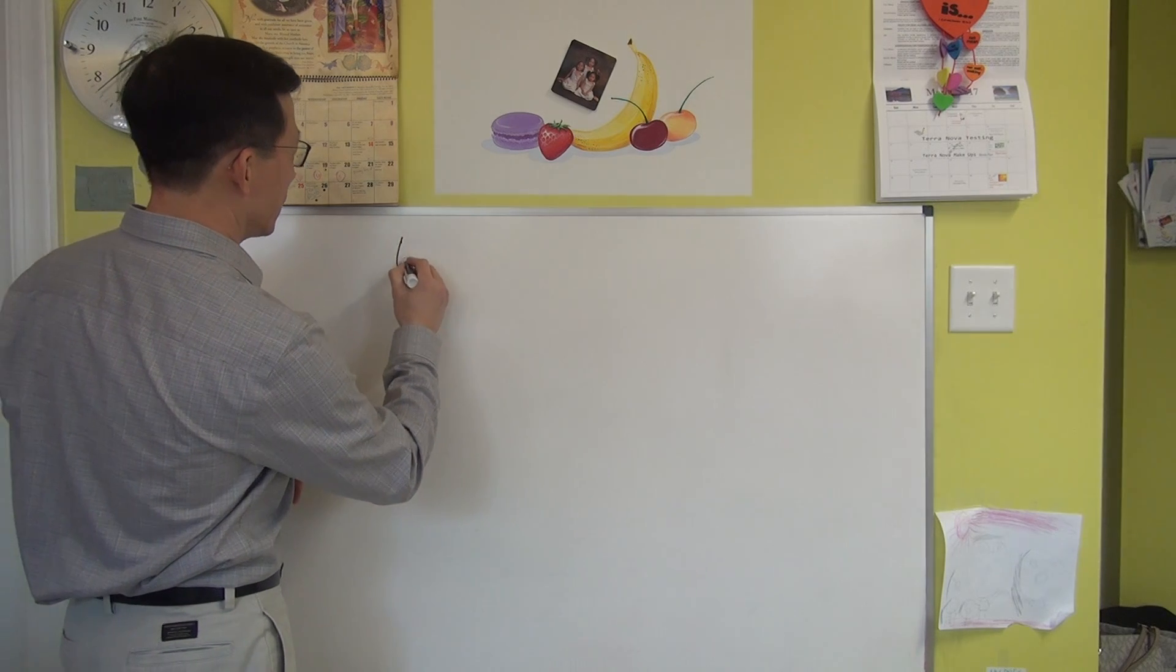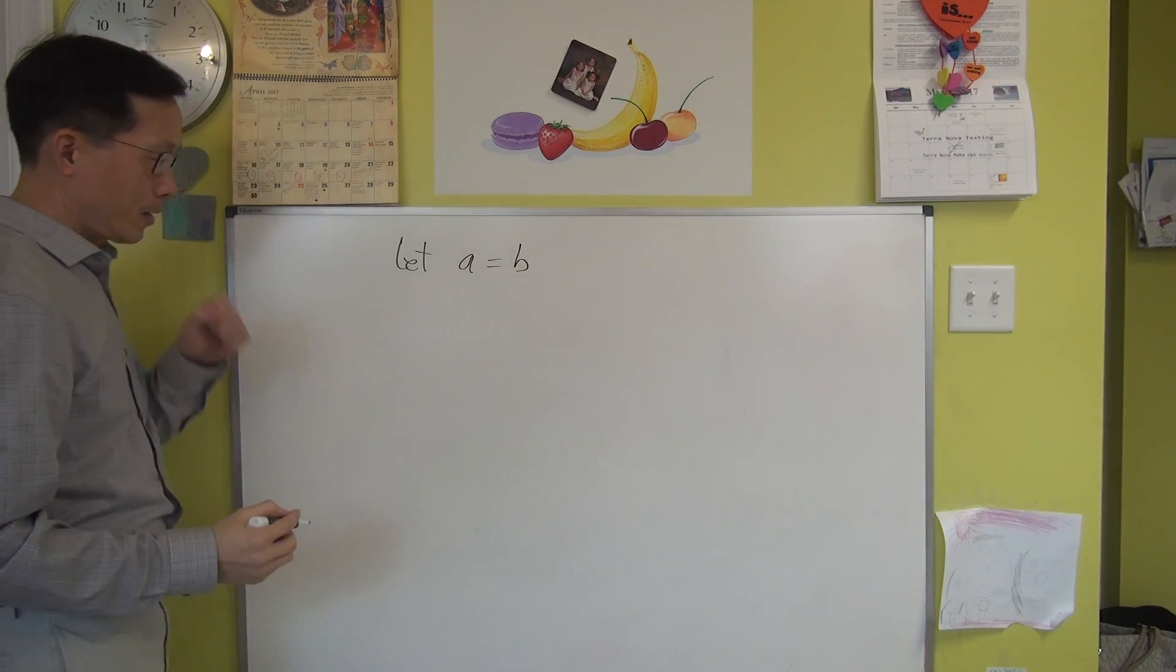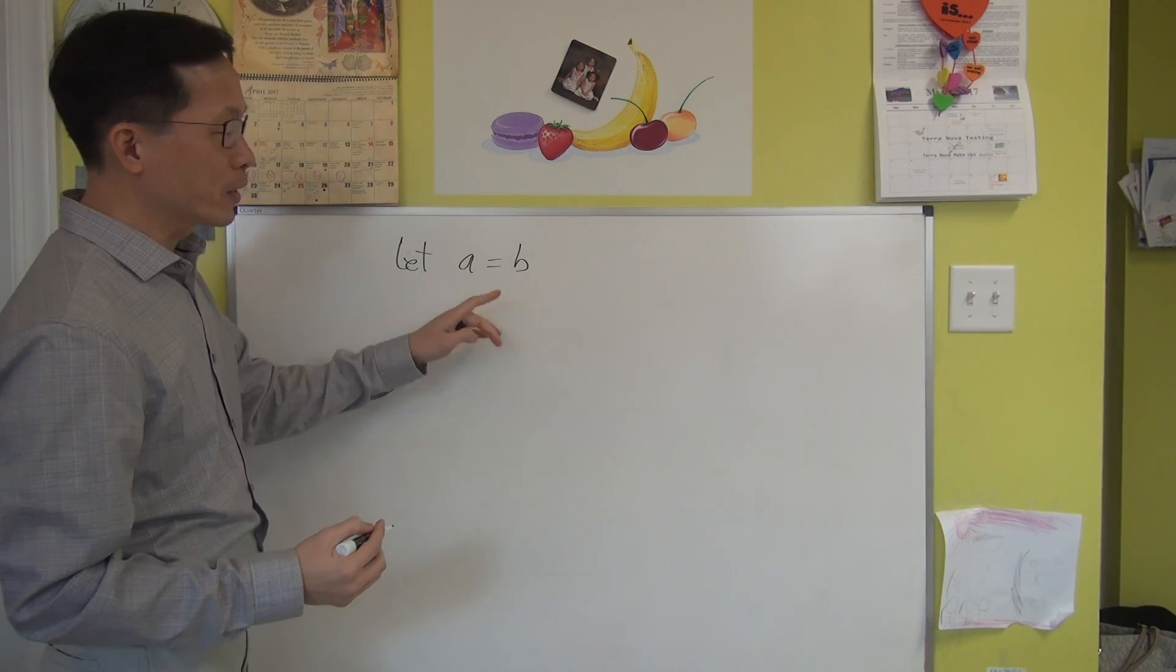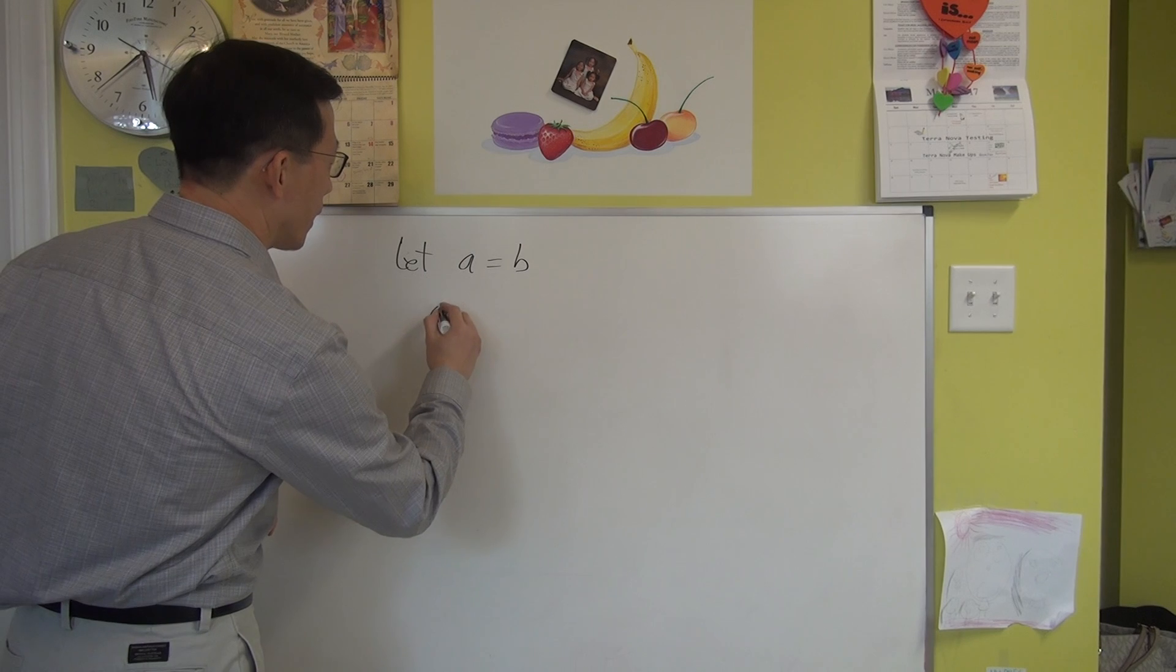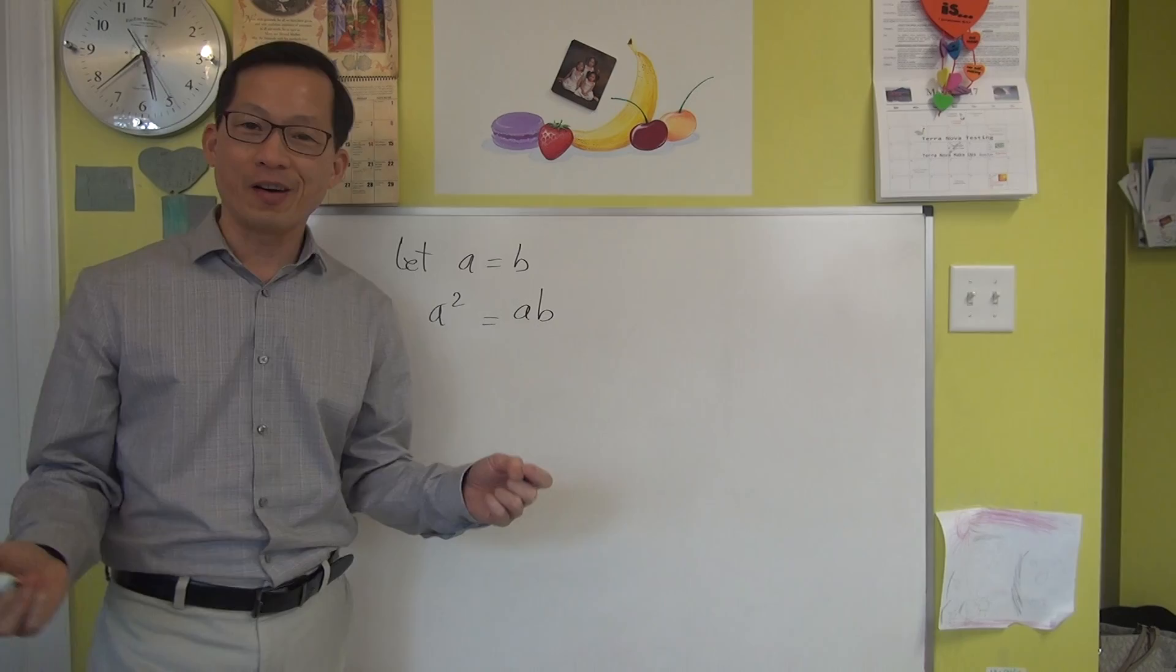Start with this. Let A equal to B. Now I'm going to multiply both sides with A. So you have A squared equal to AB. You good so far?